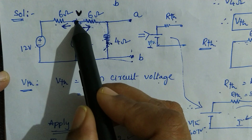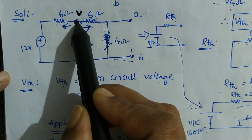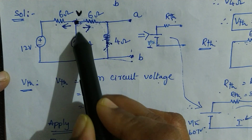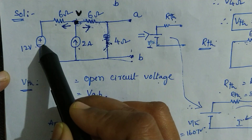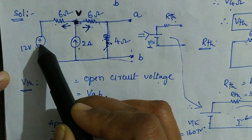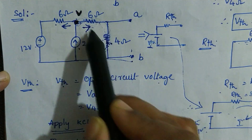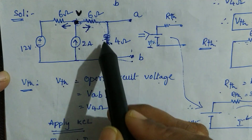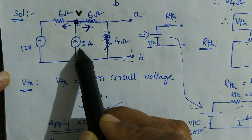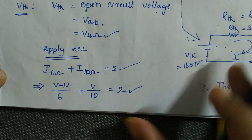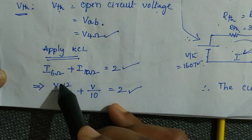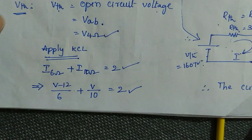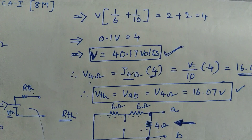Apply KCL at this particular node. That means current flowing through this branch plus current flowing through this branch is equal to 2 ampere. The current flowing through the first branch is V minus 12 by 6. For the other branch, we have two elements connected in series, 6 plus 4 that is 10, so that is V by 10 equal to 2. We can observe the same equations here — current flowing through 6 and current flowing through 10.